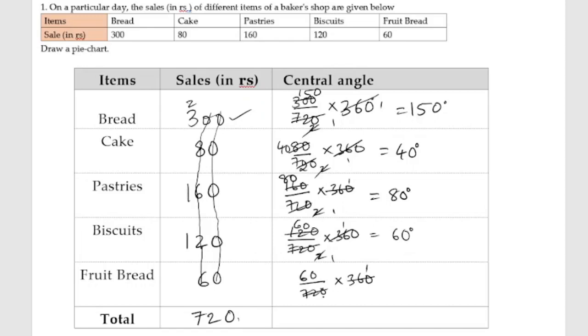Next is 60 by 720 into 360. 360 ones are 360, twos are 720, so two ones are two. Thirty times two is 60, so we got 30 degrees. Now we are having all the angles. If we add these, we should get 360.